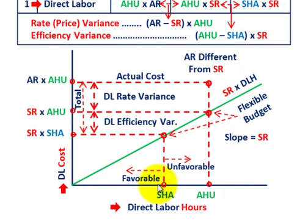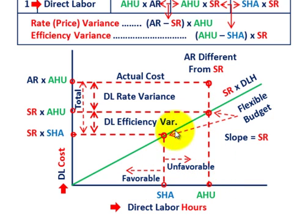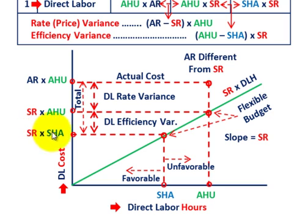Now let's look at a graphical approach. Along the x-axis at the bottom of the graph we have direct labor hours, and along the y-axis we have direct labor cost. There's a green line representing the flexible budget — that's the standard labor rate times direct labor hours. We have two key points: standard hours allowed and actual hours used. Moving along to the standard hours allowed point and up to the line, then across to the y-axis gives us standard rate times standard hours allowed — our standard amount.